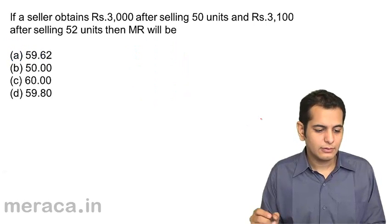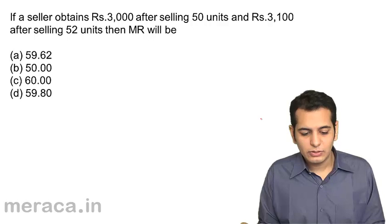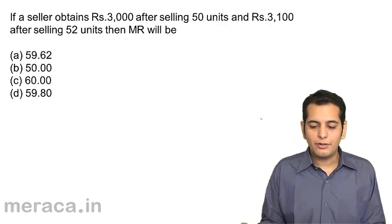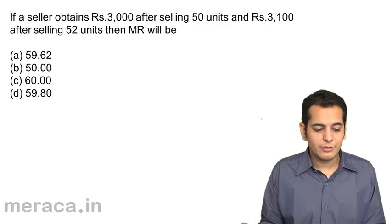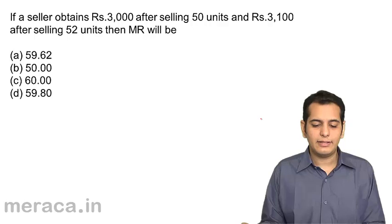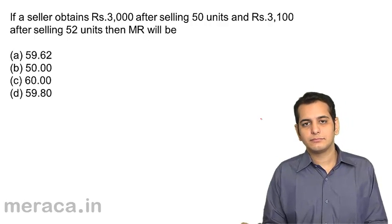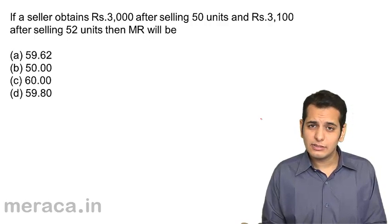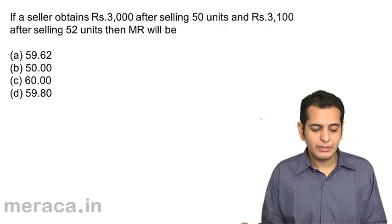Next, if a seller obtains rupees 3000 after selling 50 units and rupees 3100 after selling 52 units, then MR will be: A, 59.62; B, 50; C, 60; D, 59.8.